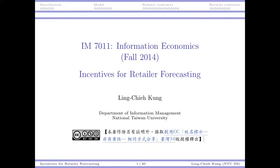Hi everyone, welcome back to Information Economics. Today we will talk about a problem related to the forecasting decision at the retailer side. We will talk about a supply chain with a manufacturer and a retailer. That manufacturer may try to offer incentives for retailers to do forecasting or not to do forecasting. So there will be multiple players involved, a supply chain contracting issue, a channel coordination issue, and private information. This lecture would be a good wrap-up for all the materials we have introduced in the first half of this semester.